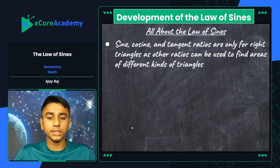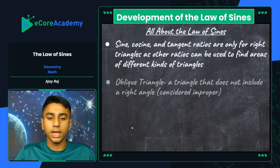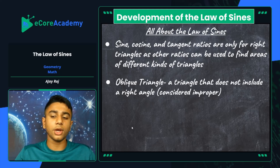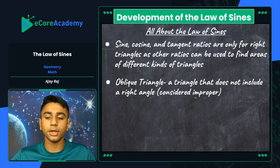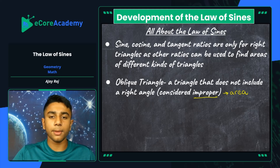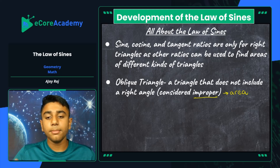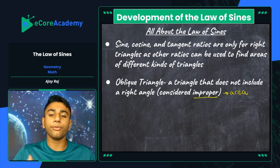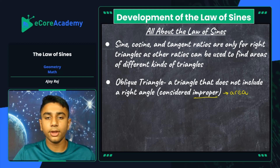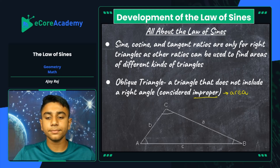The Law of Sines is for a different type of triangle — triangles other than right triangles, called oblique triangles. Oblique triangles are triangles that do not include a right angle, and they are considered improper triangles. The reason is related to area: if you have a right triangle, one of its side lengths serves as its height, derived directly from a square or rectangle. But if it's not a right triangle, you cannot calculate the area without the actual altitude being given separately — that's why it's considered improper.